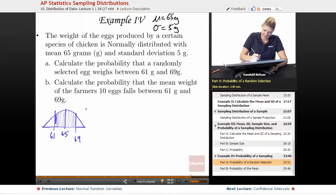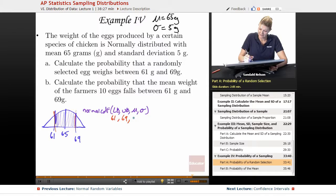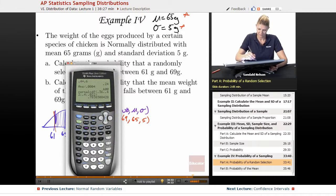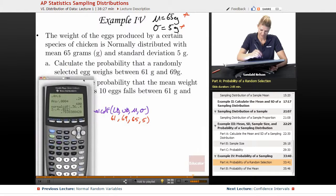So we're just going to say normal CDF, lower bound, upper bound, mean, standard deviation. We know that our lower bound is 61, right? Our upper bound is 69. Our mean is 65. Our standard deviation is 5. We go to our calculator and we plug that in.